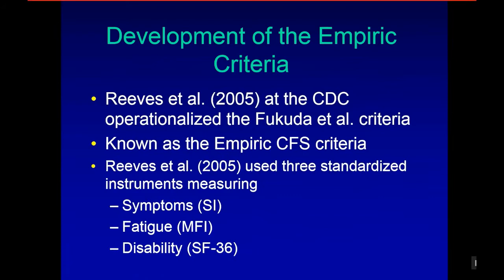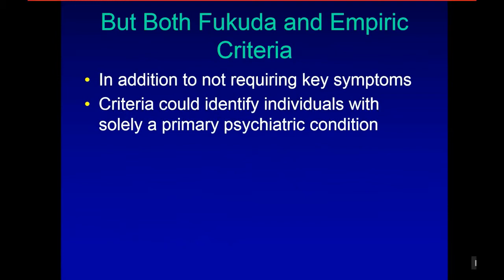We've seen the development of empiric criteria by Reeves in 2005, trying to operationalize Fukuda — known as the empiric CFS criteria. Reeves used three standardized instruments to measure symptoms, fatigue, and disability. But both Fukuda and the Reeves empiric criteria do not require key symptoms, so criteria could identify individuals with solely a primary psychiatric condition.